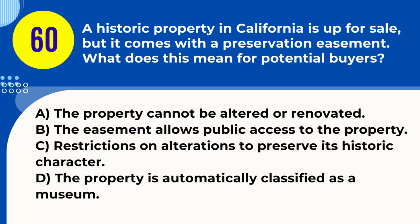Question 60. A historic property in California is up for sale, but it comes with a preservation easement. What does this mean for potential buyers? A. The property cannot be altered or renovated. B. The easement allows public access to the property. C. Restrictions on alterations to preserve its historic character. D. The property is automatically classified as a museum. Answer: C. Restrictions on alterations to preserve its historic character. Explanation: A preservation easement on a historic property in California typically means that any alterations must comply with guidelines to preserve the property's historic character.